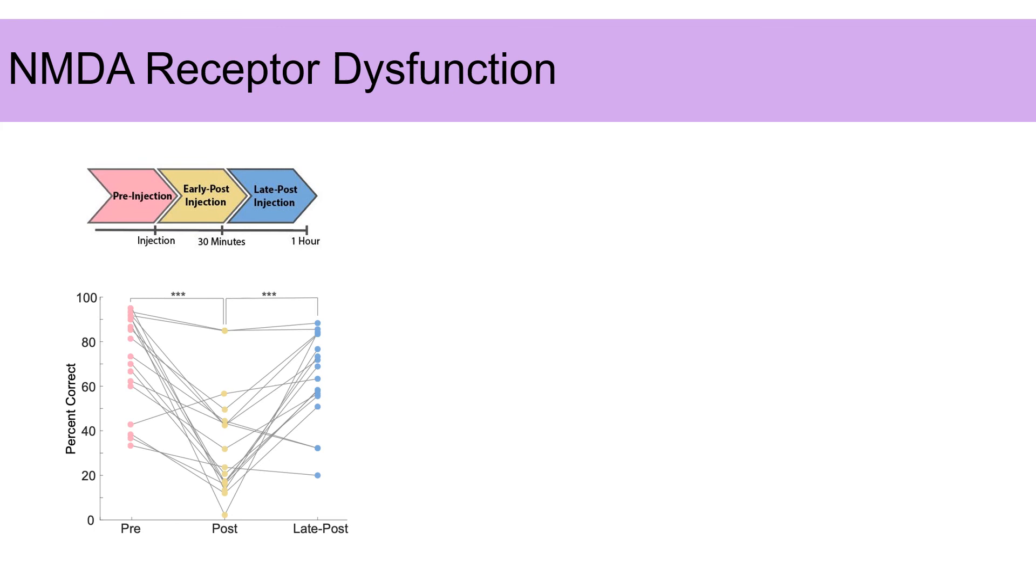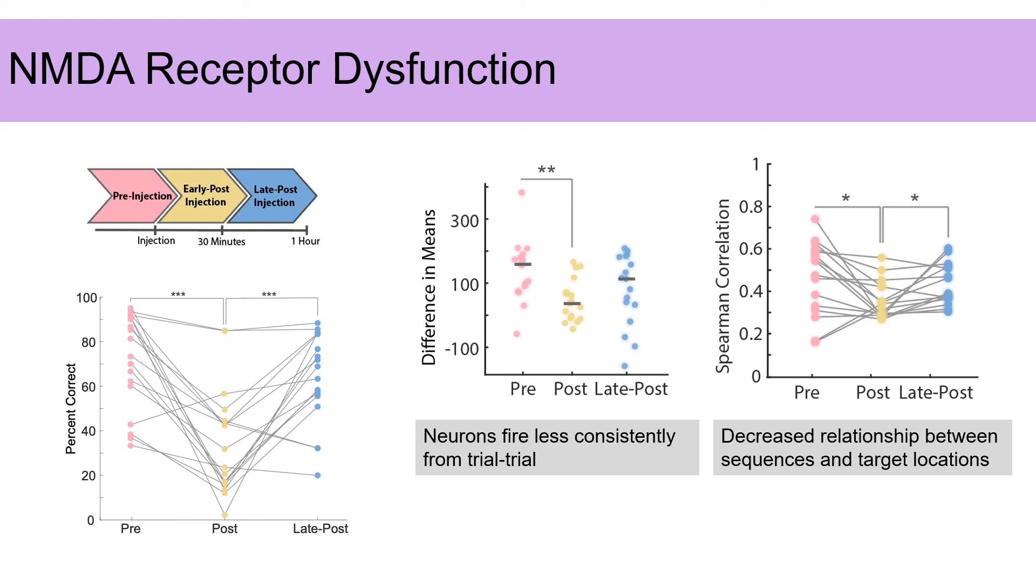Finally, we wanted to look at possible mechanisms underlying sequential activity in working memory. So we injected animals with subanesthetic ketamine, which is an NMDA receptor blocker. Ketamine is known to cause specific working memory deficits and did in fact decrease performance on our task. After injection, we found that neurons fired less consistently in time from trial to trial. We also saw that the correlation between condition centroid distances and physical target distances decreased, indicating that sequences were less predictive of remembered target location.